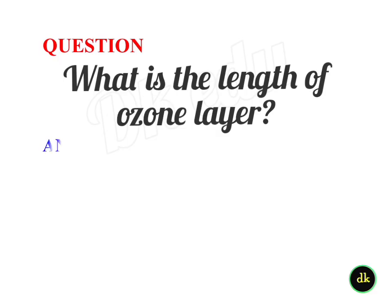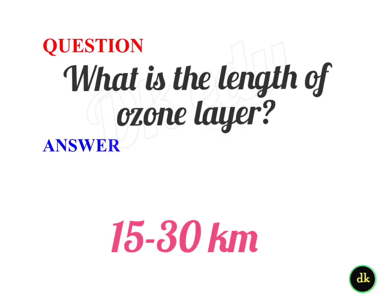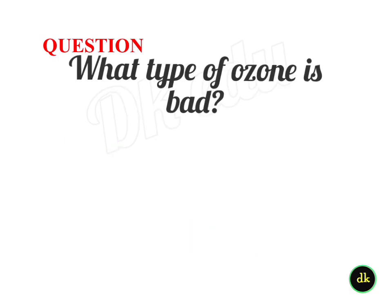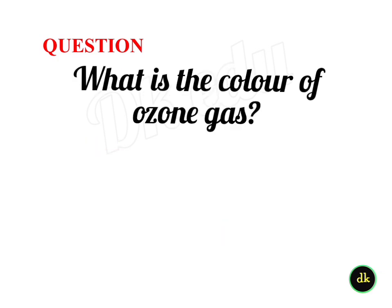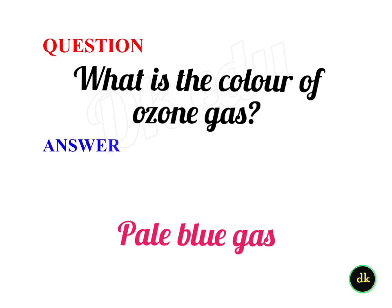What is the length of the ozone layer? Between 15 and 30 kilometers. What type of ozone is bad? Ground level ozone. What is the color of ozone gas? Pale blue gas.